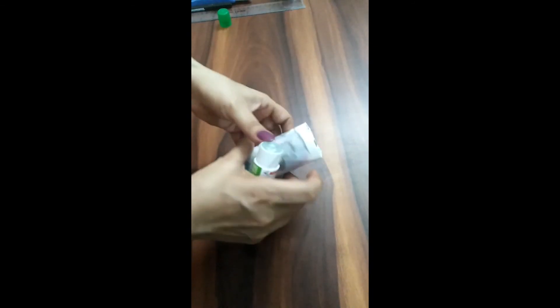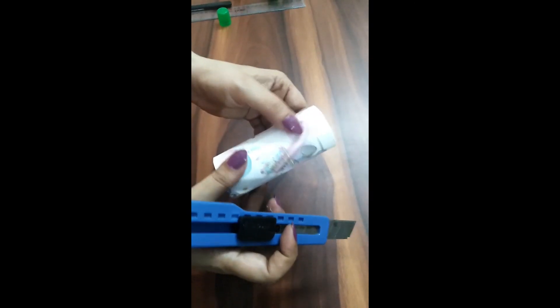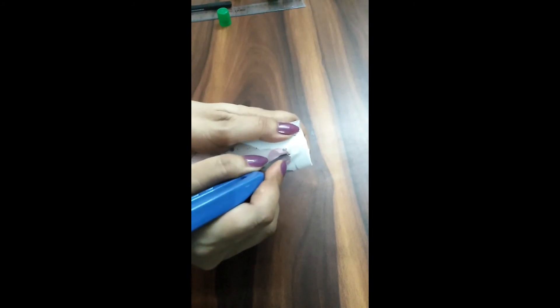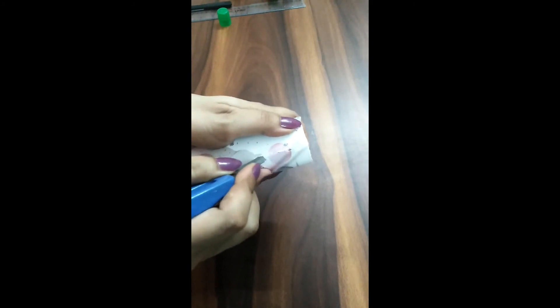Once this is done, now we need to look for the slit so that we can cut along that. So if you touch it, you will be able to feel the slit somewhere. Wherever you get the slit, you need to cut along that using the cutter.